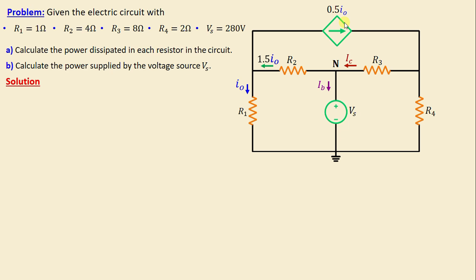IC is the current through the resistors R3, and 0.5·IO minus IC is the current through the resistor R4.